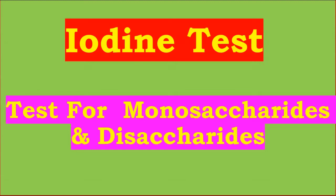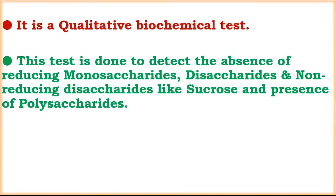In this video, we shall learn how to perform the iodine test. The iodine test is a qualitative biochemical test. It is done to detect the absence of reducing monosaccharides, disaccharides, and non-reducible disaccharides like sucrose, and the presence of polysaccharides. This test is done especially because of polysaccharides.